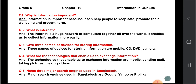This section is for Grade 5, information in our life, Chapter 10. Why is information important? Information is important because it can help people to keep safe, promote their well-being, and prevent harm. What is the internet? The internet is a huge network of computers connected together all over the world — it enables us to collect information more easily. Devices for storing information include mobile phones, CDs, DVDs, and cameras.